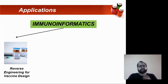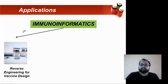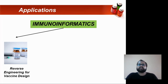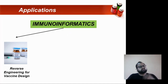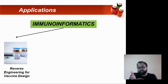In vaccine design, we want to identify the various surface antigens or the various bacteria and viruses which can be attenuated in order to develop a vaccine — that is where immunoinformatics plays a very important role. Also, there is something called reverse vaccinology, where you initially predict the genomics, and from the genomics you predict the protein of interest. This is called reverse engineering for vaccine design.